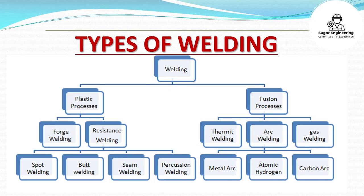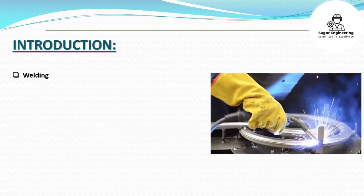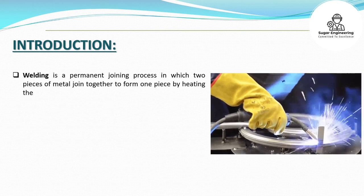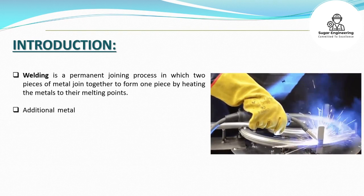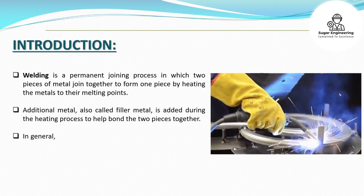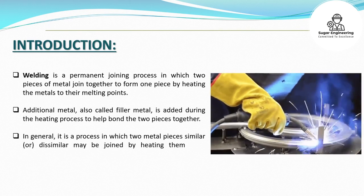Types of Welding. Welding is a permanent joining process in which two pieces of metal join together to form one piece by heating the metals to their melting points. Additional metal, also called filler metal, is added during the heating process to help bond the two pieces together.